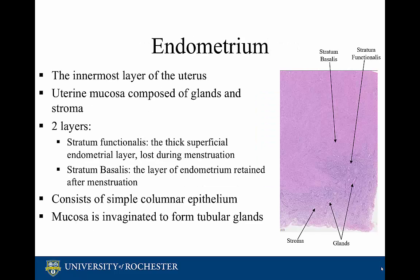The endometrium is the innermost layer of the uterus, composed of simple columnar epithelium. It also consists of a uterine mucosa composed of many glands and stroma. The mucosa is invaginated to form tubular glands. The endometrium has two layers: the stratum functionalis and the stratum basalis.